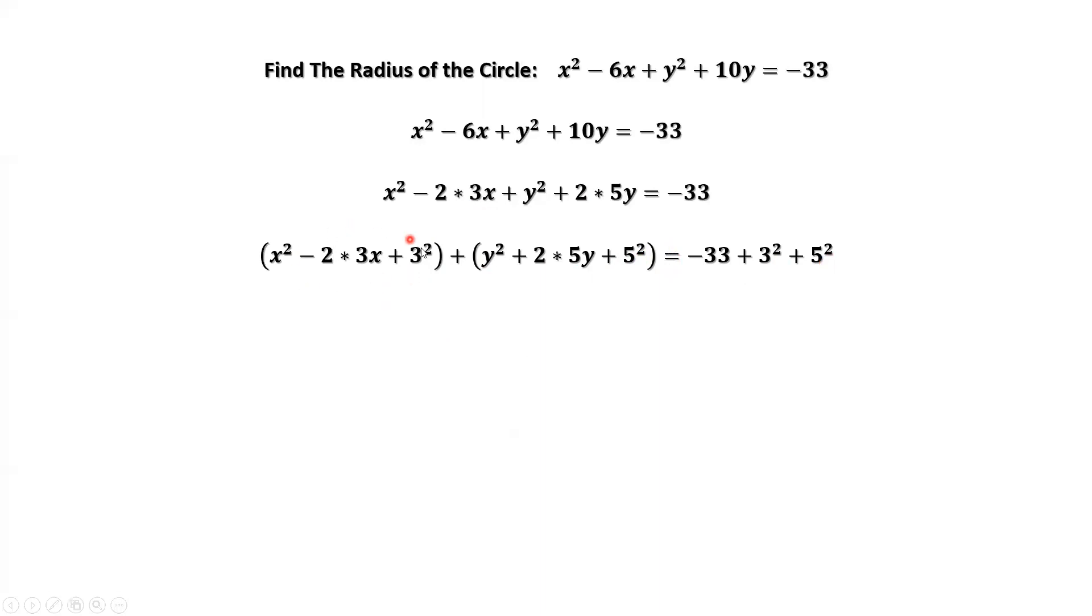What is the first group? It is x minus 3 squared. What is the second group? It is y plus 5 squared. We simplify the right-hand side. Then we have negative 33 plus 9 plus 25.